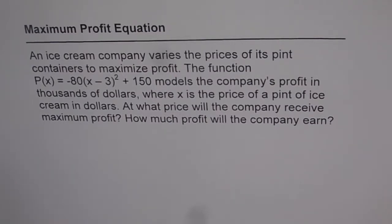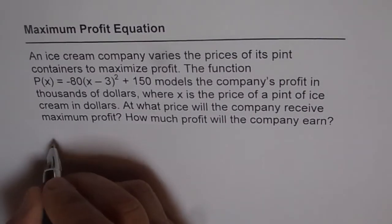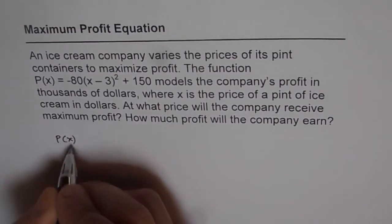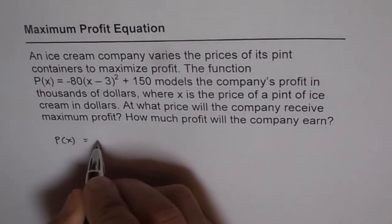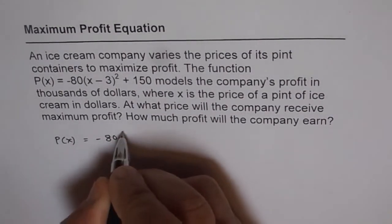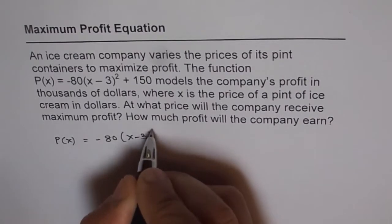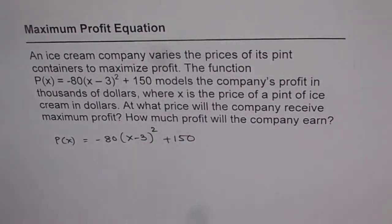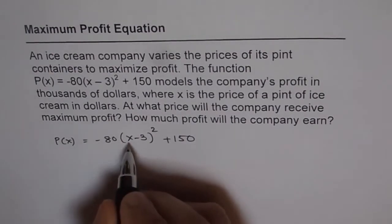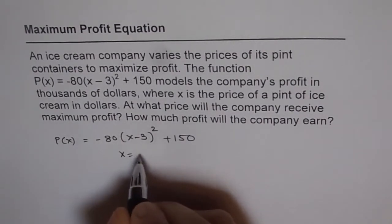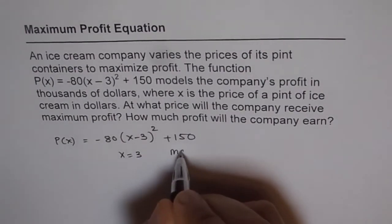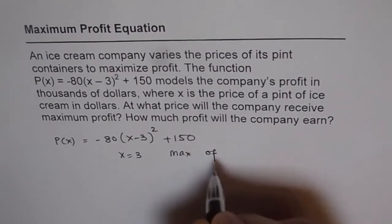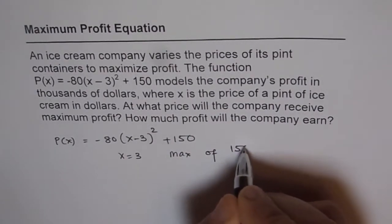This example is for you to read the values straight from the equation itself. Let's look into the equation. It is profit function P(x) = -80(x - 3)² + 150. Now from here you know at x = 3 we have maximum profit of 150, correct?